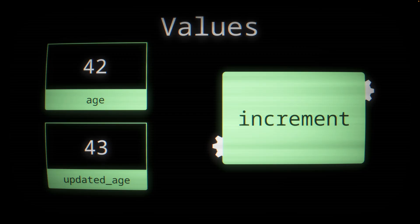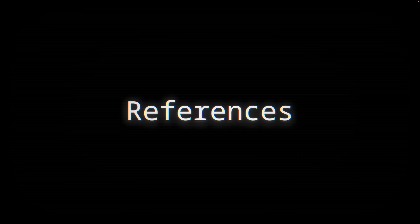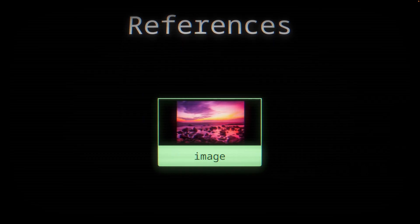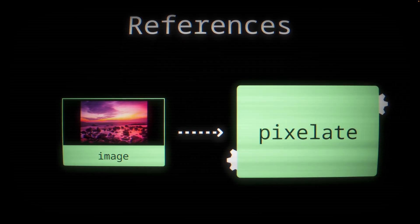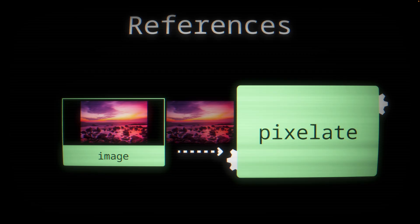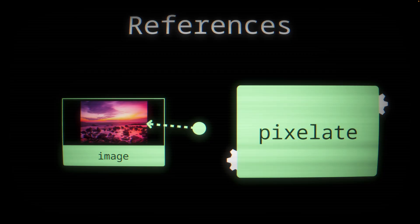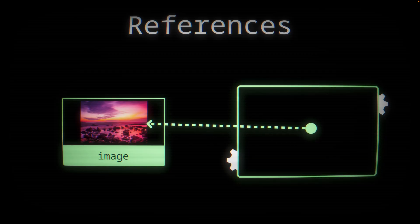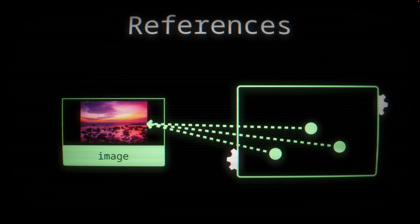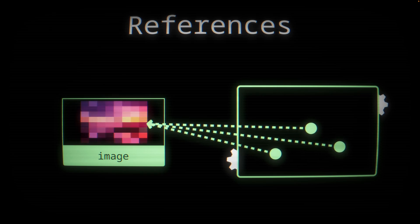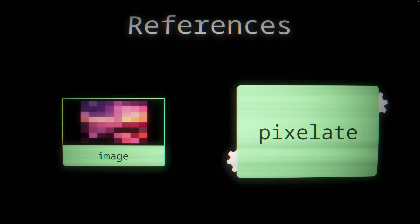But sometimes passing a value into a function isn't what we want. That's where references come in. Say we have a large image we want to process. We could pass this image data into the pixelate function, but to do that we might be copying quite a bit of data. Instead we could pass something like a token — a reference — that points back to the original image data. The function could create copies of this reference as it sees fit, and finally make changes to the data. But notice here that the original data has been modified. We've saved time and memory by avoiding any copy operation, but we've lost our original data.